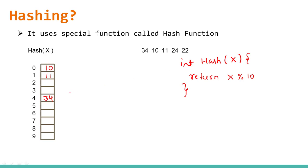Since index 4 already has the value 34, inserting 24 causes a collision. To handle this, we use a concept where we find the next available space and store 24 there. Then for 22: 22 % 10 = 2, so 22 is stored at index 2. This is how values are placed using the hash function.